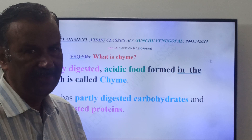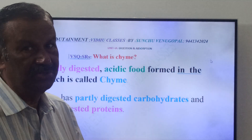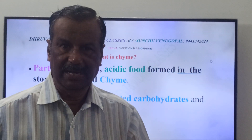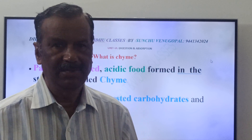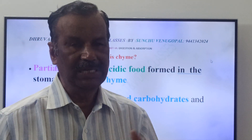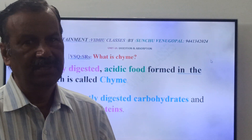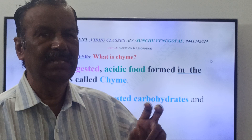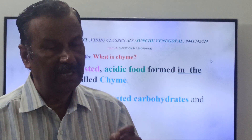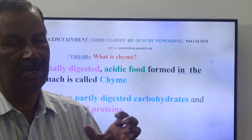This bolus, through the esophagus, enters into the stomach. In the stomach, you know friends, the stomach has gastric glands. Those gastric glands secrete HCl and pepsinogen, renin, and some other enzymes. You know, friends, the stomach has thicker walls than all other alimentary canal or gut walls.